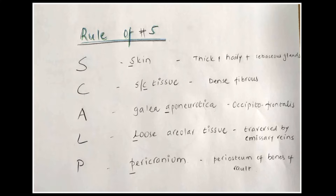The spelling of SCALP itself is S-C-A-L-P, made up of five letters, and so are the layers. There are five layers you need to remember regarding the scalp: first is the Skin, then Cutaneous (subcutaneous) tissue, then A for Aponeurosis or galea aponeurotica, then Loose areolar tissue, and fifth is Pericranium.